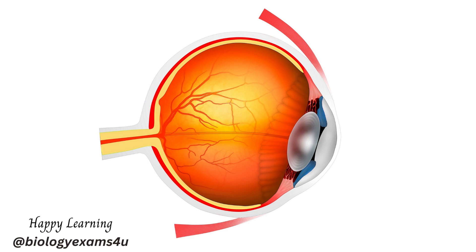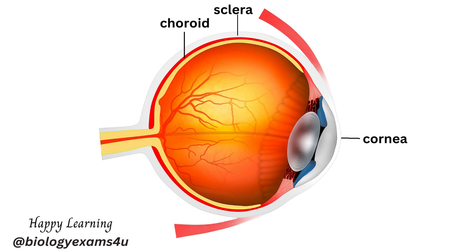Now let us understand the different parts of the eye and their function one by one. The eyeball is made up of three layers. The outer layer is the sclera, which is a firm white of the eye — an opaque membrane that lines the inside of the eye. The cornea is a clear, thin, dome-shaped tissue that bulges slightly in the sclera at the front of the eye. It functions like a window that controls and focuses the entry of light into the eye.